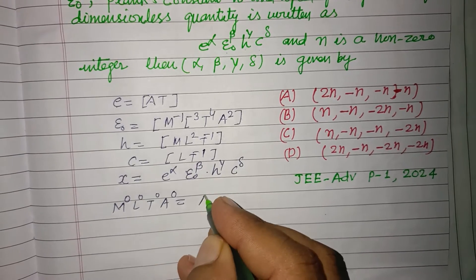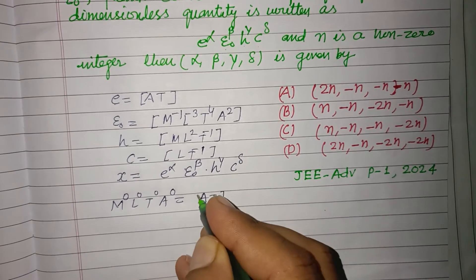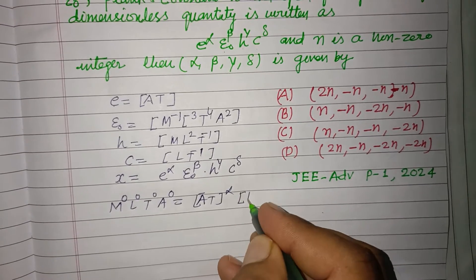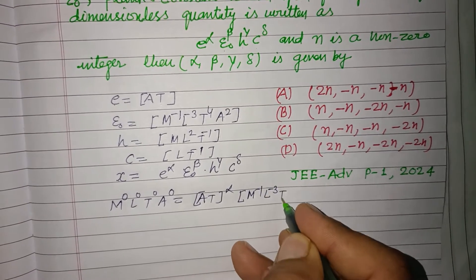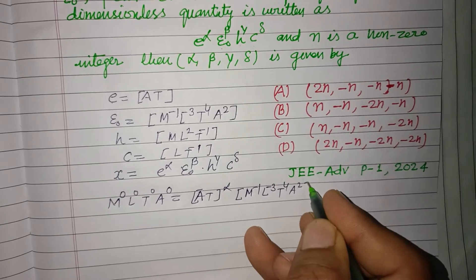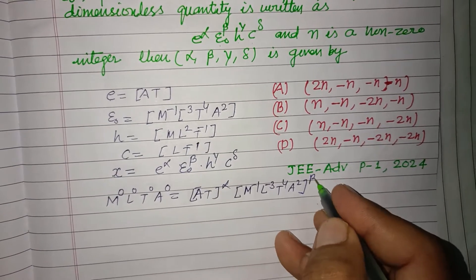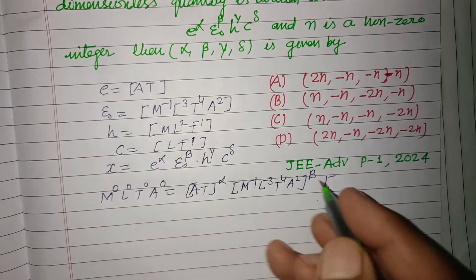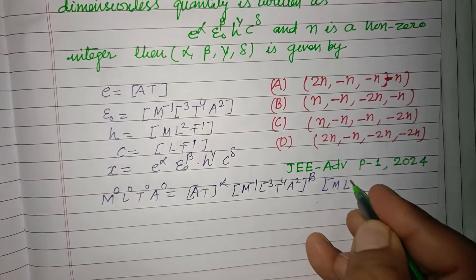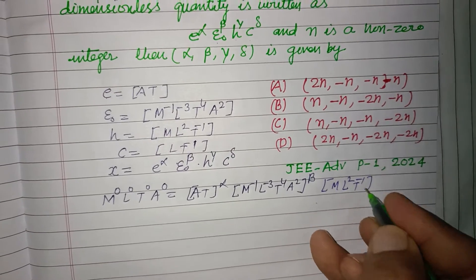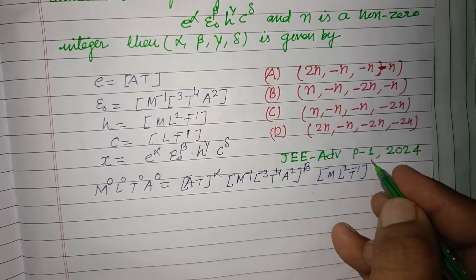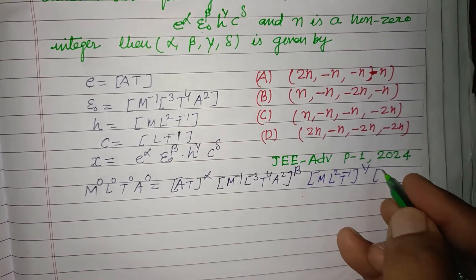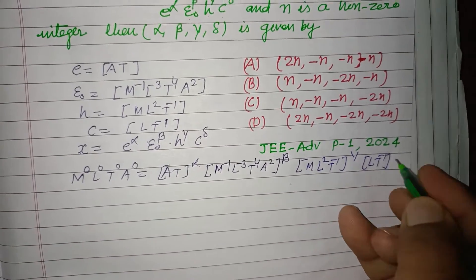So we have: (AT) to the power alpha, times (M minus 1, L minus 3, T4, A2) to the power beta, times H — which is M L squared, T minus 1 — to the power gamma, and (L T minus 1) to the power delta.